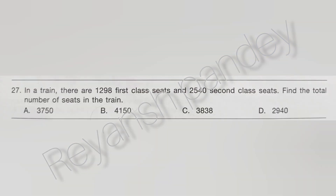In a train, there are 1298 first class seats and 2542 second class seats. Find the total number of sitting places in the train. Add both numbers. The answer is C — 3838.